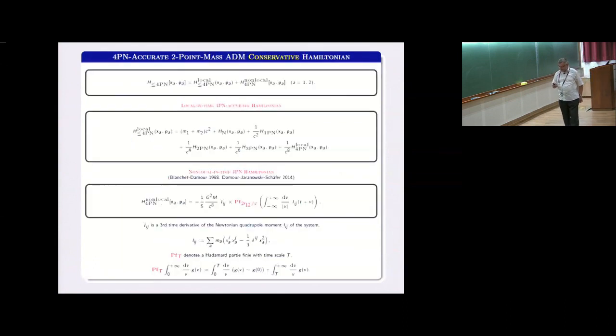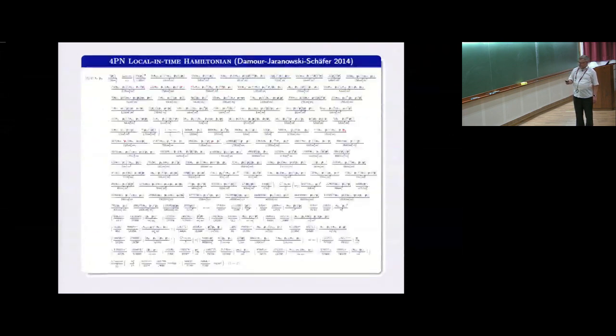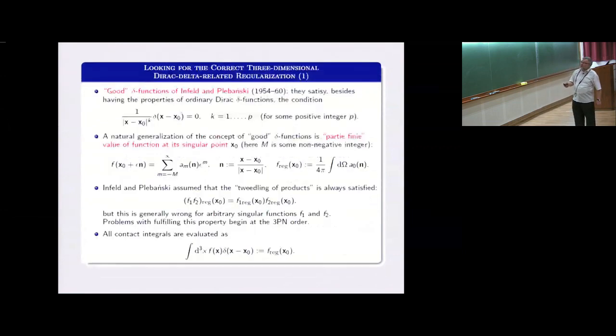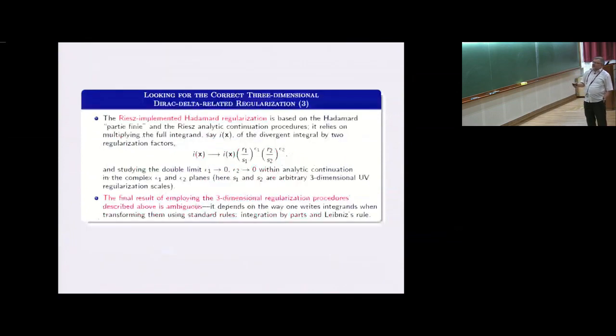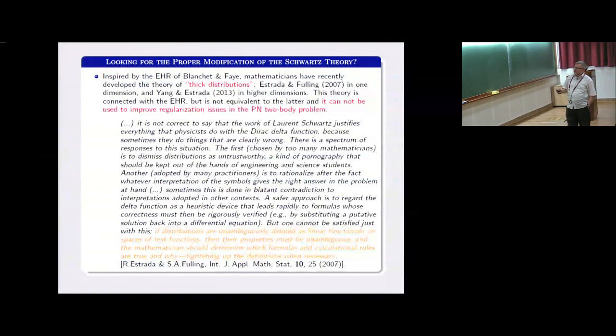How much time? Two minutes. I will skip the rest. I will only show you that because of complicated results, computations, the results of the computation is also quite complicated. Please look at the 4 post-Newtonian zone Hamiltonian, fully explicit. It looks like this. And now the last remark on the three-dimensional improvement of the Schwartz distribution theory. I have to skip all this stuff and I will use the last slide only.